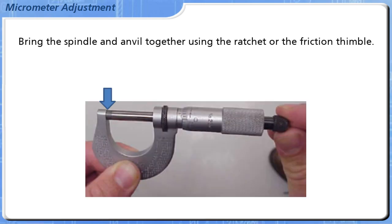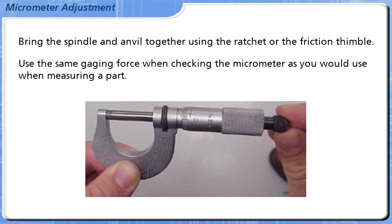Bring the spindle and anvil together using the ratchet or the friction thimble. Use the same gauging force when checking the micrometer as you would use when measuring a part.